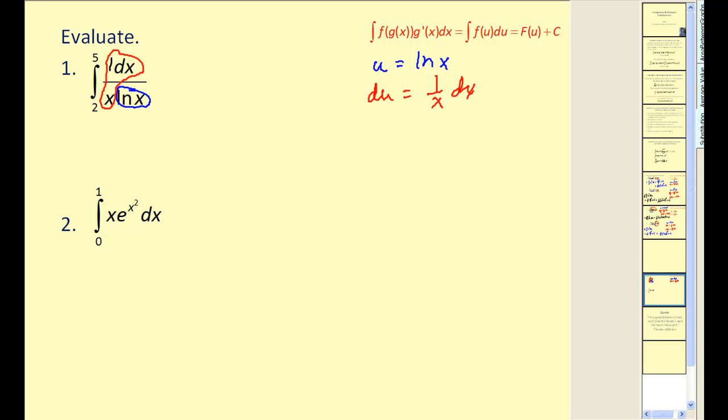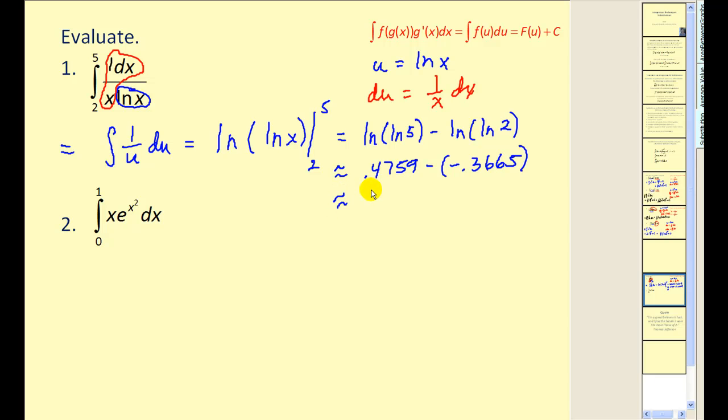Here's our u and whatever's left is our du. Now these limits of integration are in terms of x. I'm going to leave them off temporarily. So the blue part would give us 1/u and the red part would give us our du. Remember, the antiderivative of 1/u is just ln u. But our u is actually ln x. Now this is a definite integral, so we need to evaluate this at 5 and 2. So we get an approximate value of 0.8228.